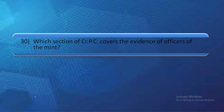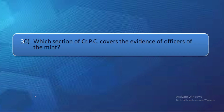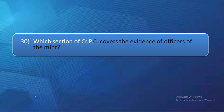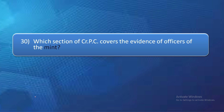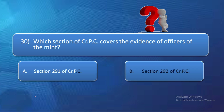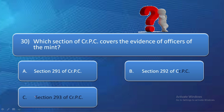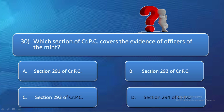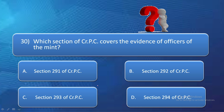Question number 30: Which section of CrPC covers the evidence of officers of the Mint? Option A: section 291, option B: section 292, option C: section 293, option D: section 294 of CrPC. The correct answer is option B — section 292 of CrPC, which deals with the evidence of officers of the Mint.